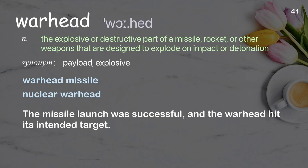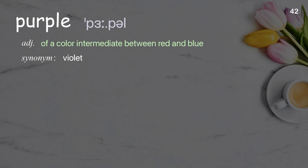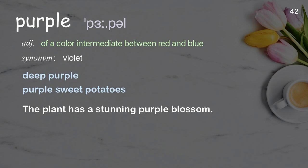Purple: of a color intermediate between red and blue. Examples: deep purple, purple sweet potatoes. The plant has a stunning purple blossom.